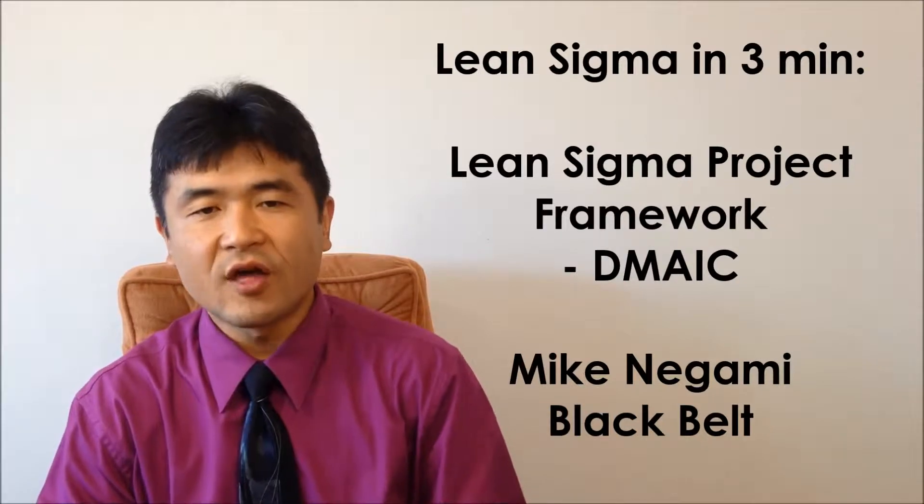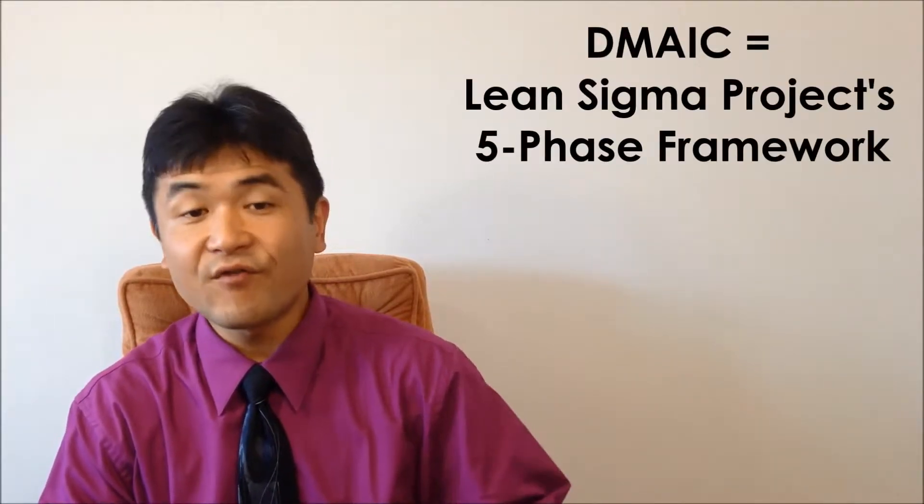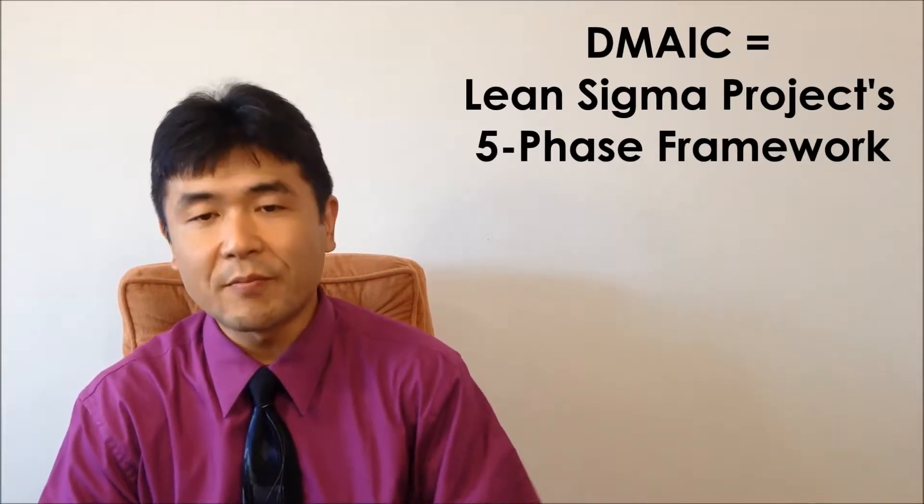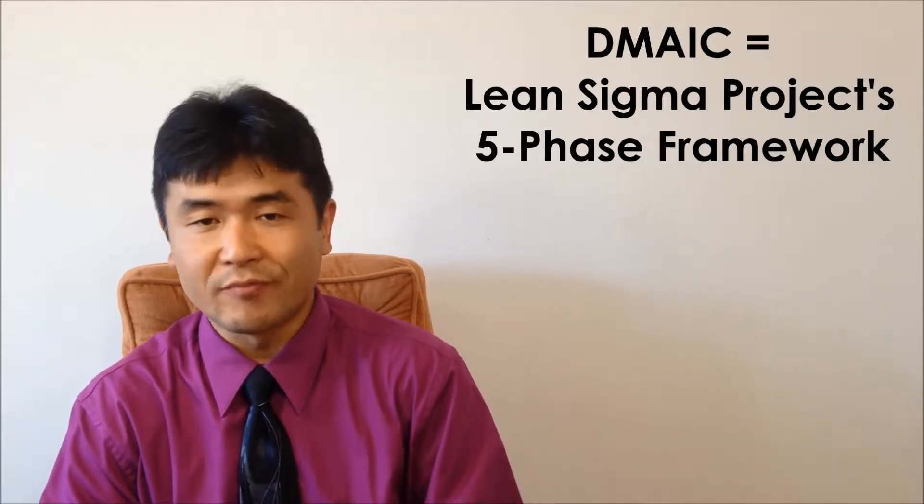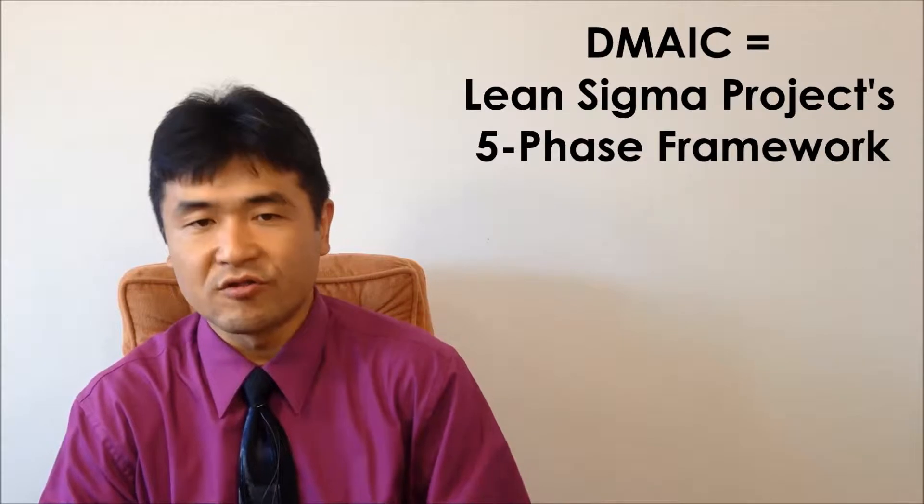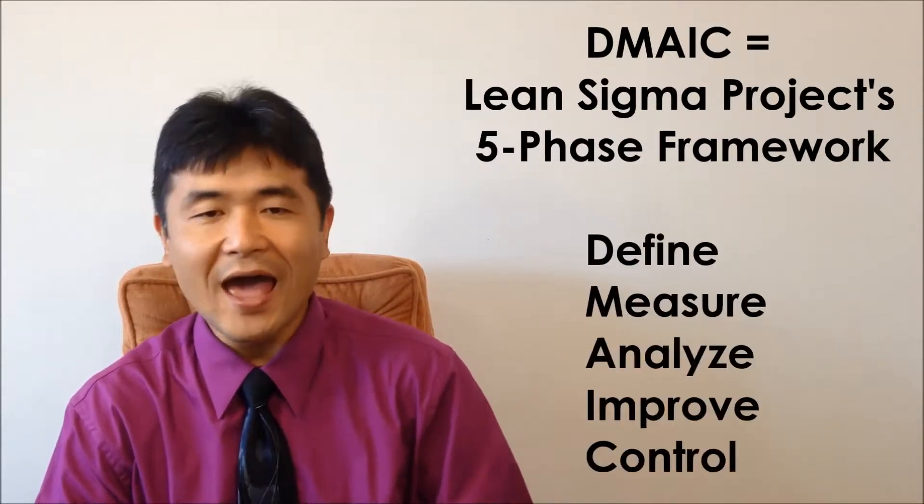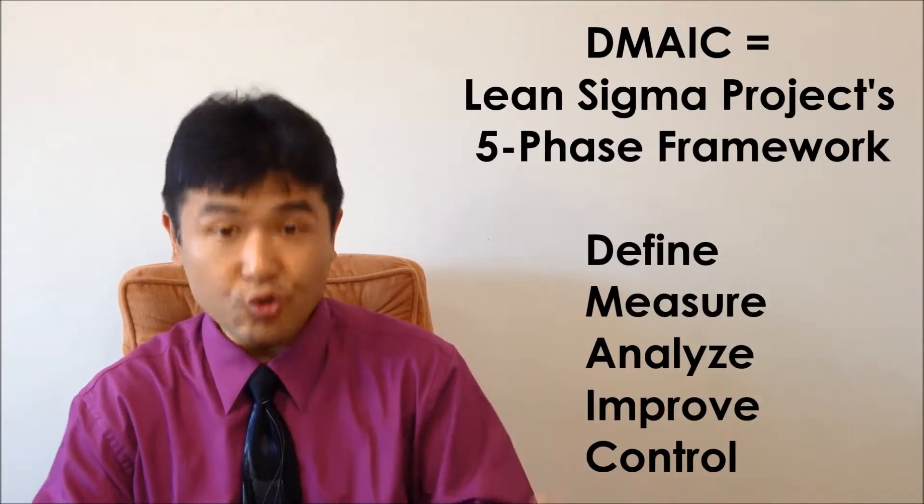For the next several weeks, I'm going to talk about DMAIC. DMAIC represents a five-phase framework of Lean Sigma projects and is an acronym that consists of initials for each phase: define, measure, analyze, improve, and control.